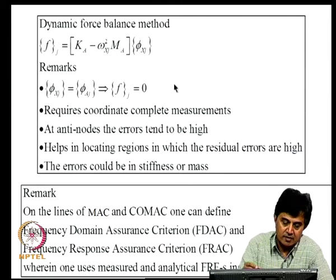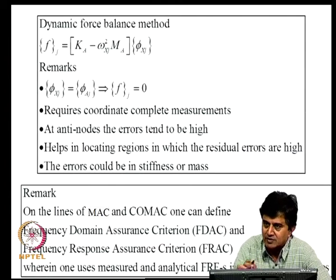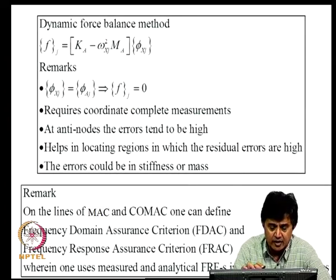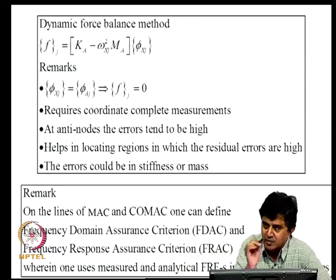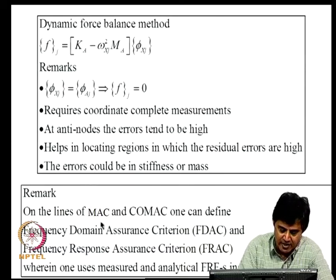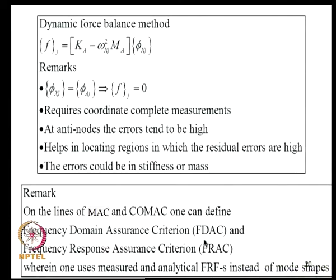These matrices are defined in terms of natural frequencies and mode shapes, damped or undamped, but similar quantities can be defined using frequency response functions. Analytically we can predict the FRF and experimentally we can measure it. On the lines of MAC and COMAC, one can define frequency domain assurance criteria (FDAC) and frequency response assurance criteria (FRAC), where measured and analytical FRFs are used instead of mode shapes. These serve the same purpose as MAC and COMAC but do not require extraction of mode shapes and natural frequencies.